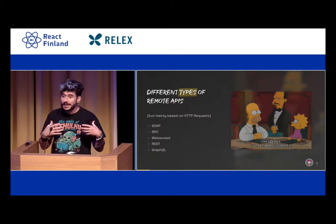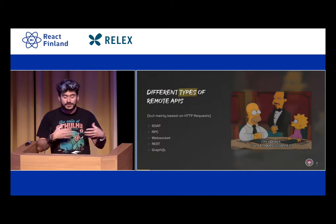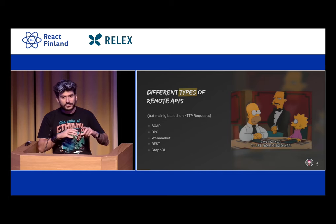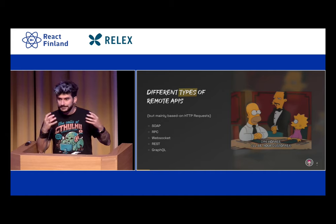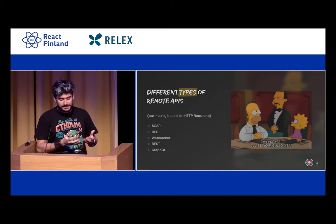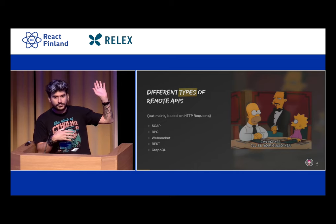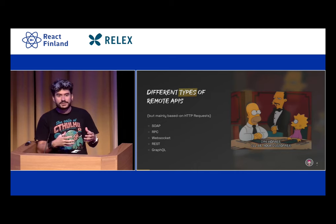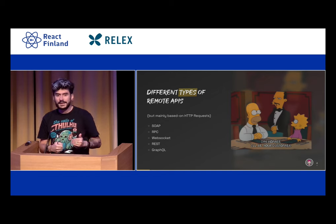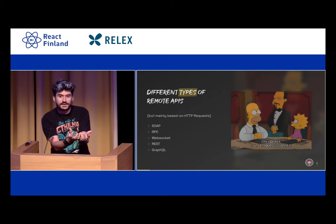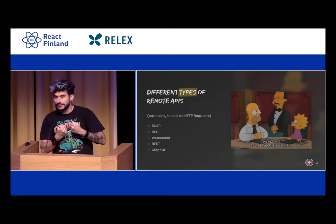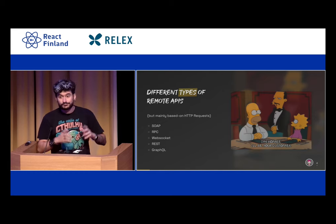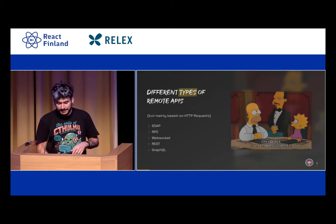There are different types of remote APIs and remote services. When we talk about controlling remotely, it's most often based on HTTP requests. We could use SOAP, RPC, WebSocket, REST, GraphQL — whatever you want. But it's always the same thing: you perform a request, pass a payload, explain what you want to achieve, and the backend service returns some kind of answer in response — either 'okay, it's done' or something more complex.